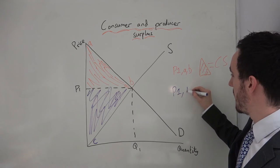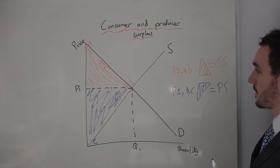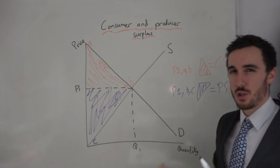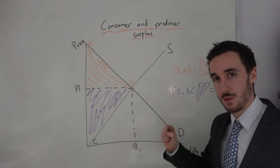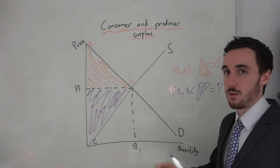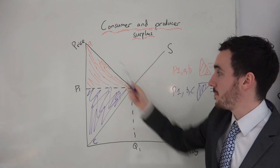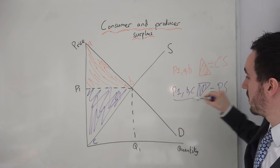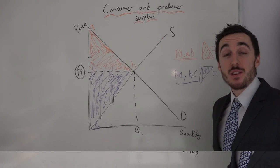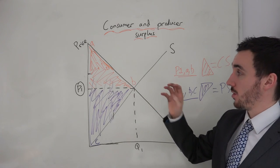So P1, B and C is the producer surplus triangle. In your exams, I would label these up clearly to show the examiner you know exactly what you're talking about, eliminating any ambiguity about which triangle is above or below. Shade in the triangles and label A, B and C to show clearly using the letters what the triangles represent for consumer surplus and producer surplus. You can show it on two different diagrams or on one combined diagram.